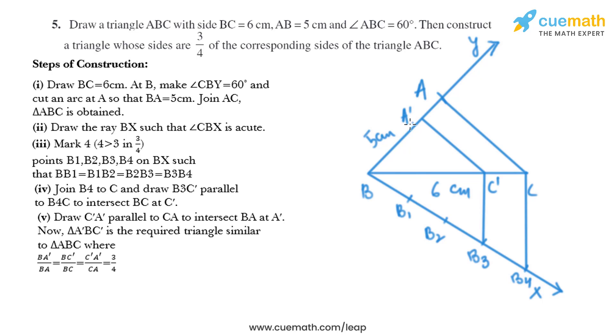And we have got our triangle that is A'BC'. So triangle A'BC' and triangle ABC are similar. So we'll get BA' by BA equals BC' by BC and that equals C'A' by CA and that equals three by four.